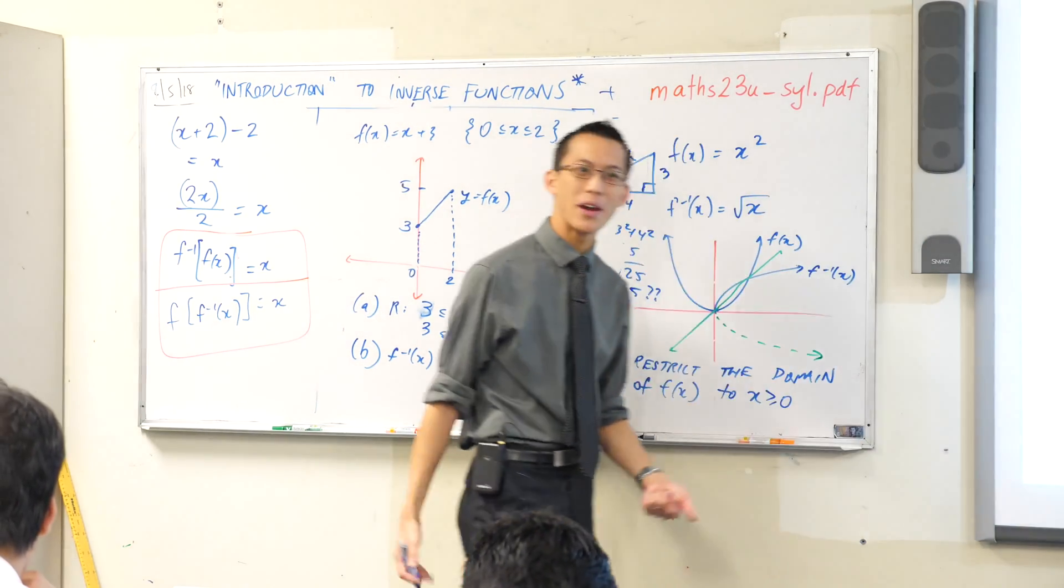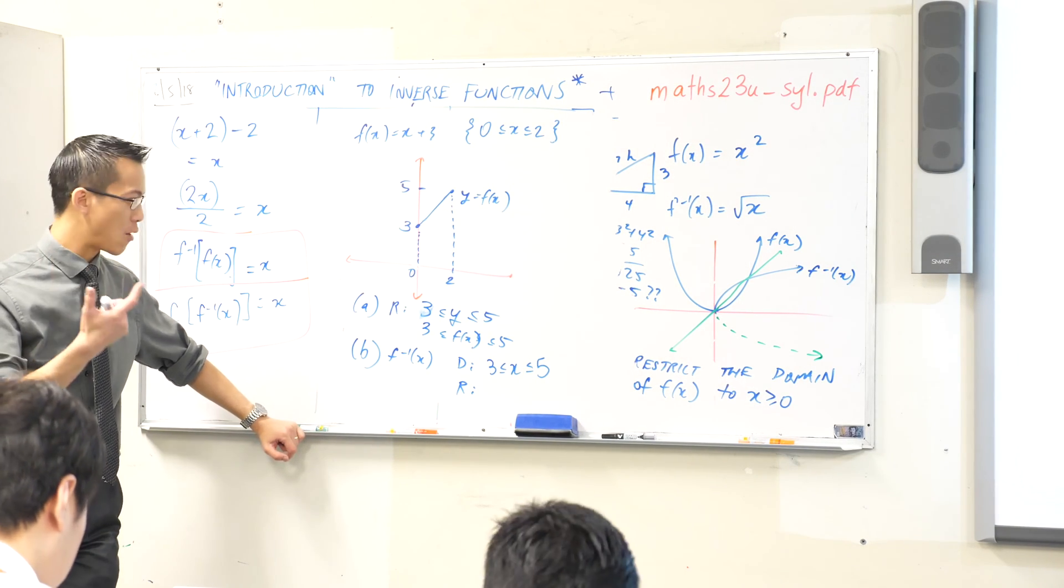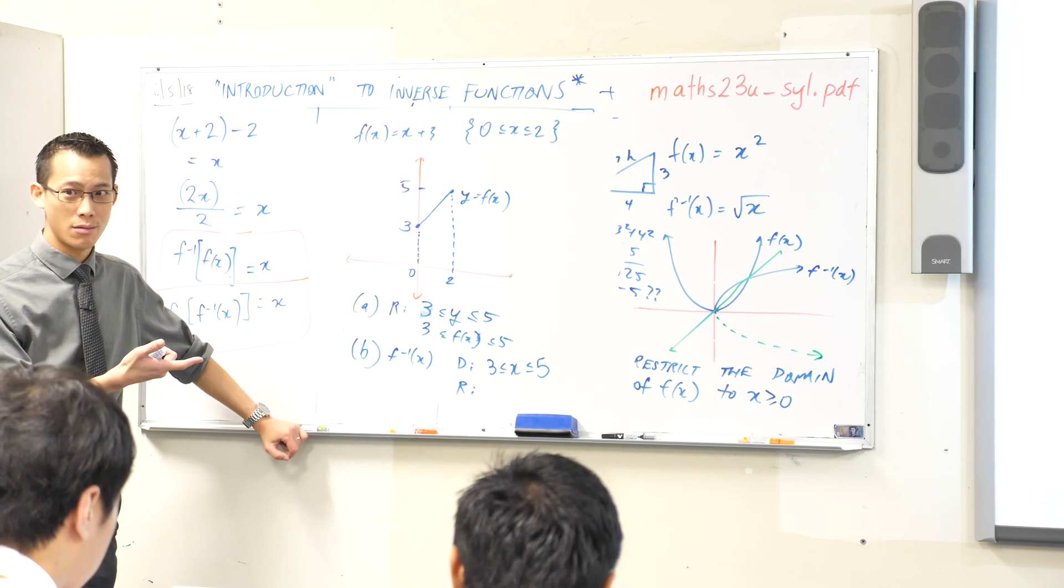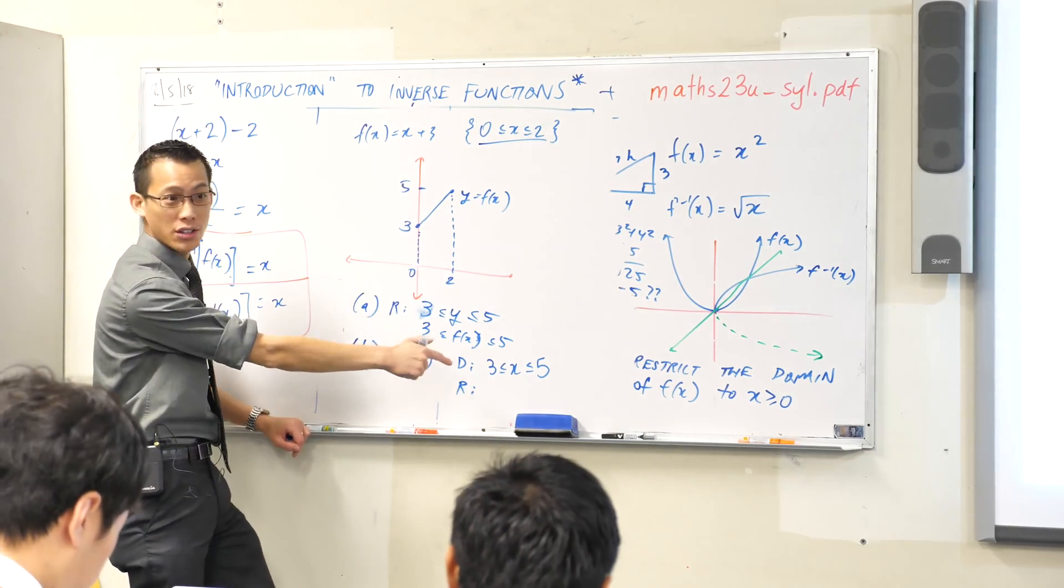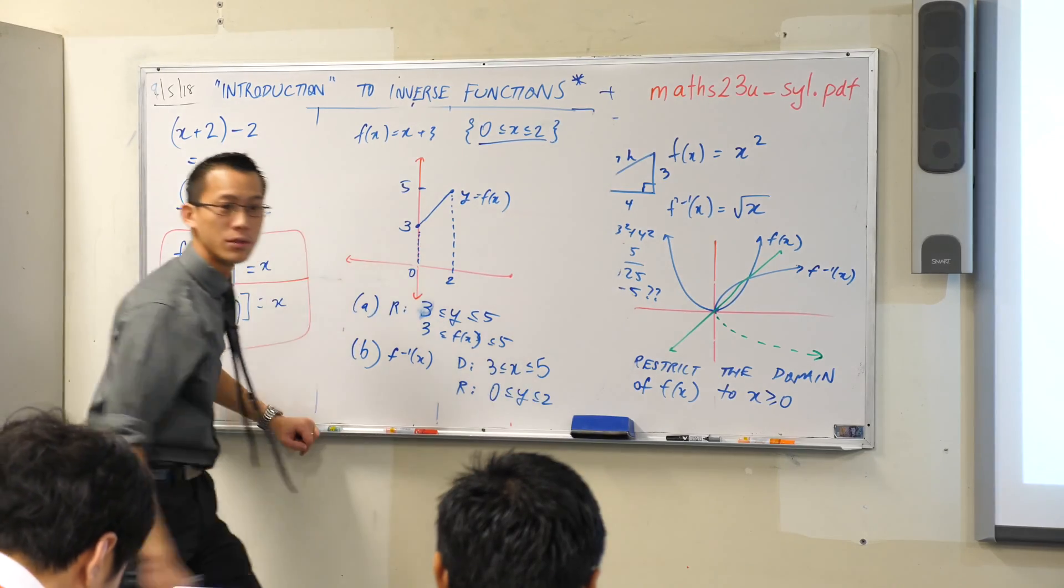Now I want to work out range, where do I get that from? Have a look. I'm going to do a switch, right? I want y's. Where did I see a restriction on x? 0 to 2. Yeah, 0 to 2, back in the original question. Right? So that's my range restriction for the inverse. 0 is less than or equal to y, less than or equal to 2. Okay?